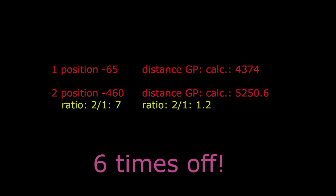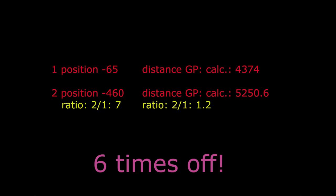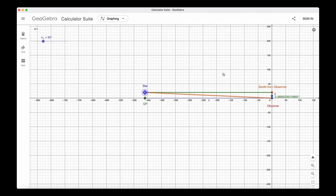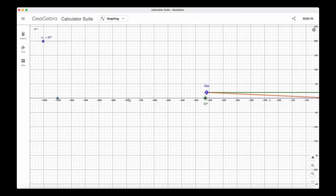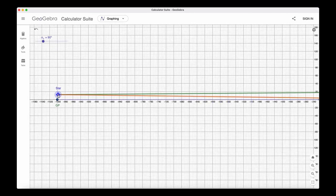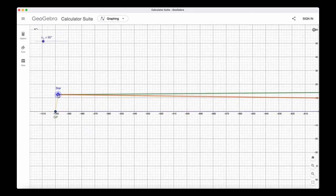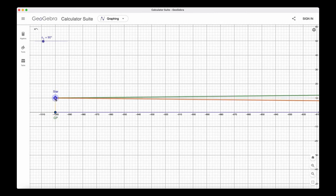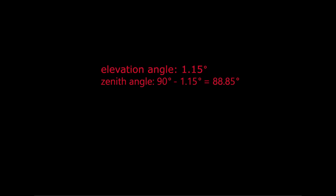But he doesn't stop there. Now he places the GP to a position in the diagram at minus 1000. And again, he doesn't calculate the GP. According to his method of calculating, this distance would be 90 minus 1.15 times 60 equals 5331 nautical miles.